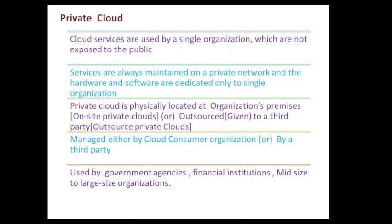Next, we have private cloud. Services are used by a single organization and are not exposed to the public. Services are always maintained on a private network, and the hardware and software are dedicated only to that single organization. Private cloud is physically located at the organization's premises or given to a third party. Based on this, it is divided into on-site private cloud or outsource private cloud, managed either by the cloud consumer organization or by a third party. It is used by government agencies, financial institutions, and mid-size to large-size organizations.